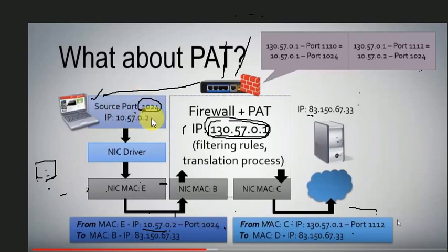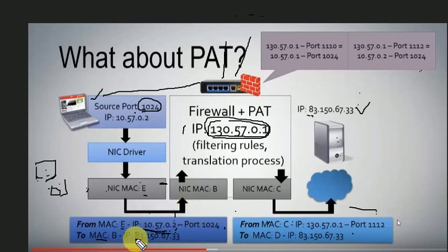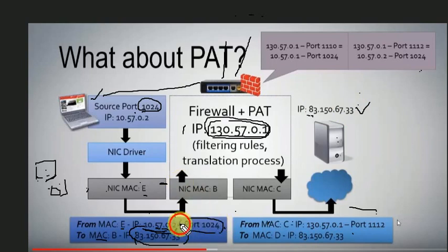My system is 10.57.0.2 and I want to reach an FTP server. My IP sends directly. I have MAC E. My source IP is 10.57.0.2, and my destination MAC is B — the firewall. The destination IP is the FTP server address. This path operates at layer 3 for IP and layer 4 for TCP.